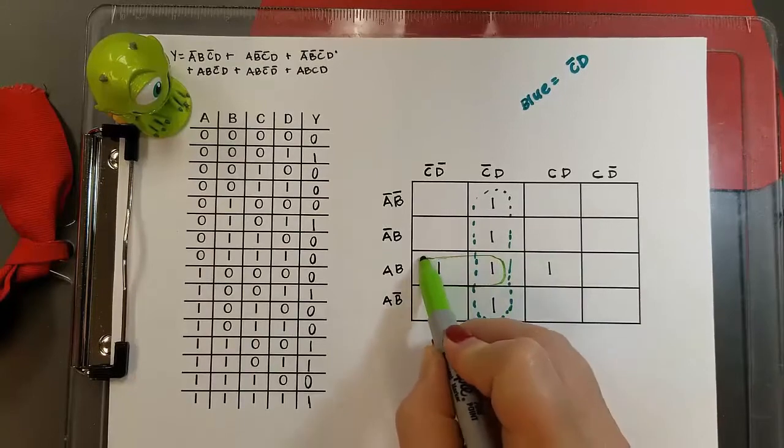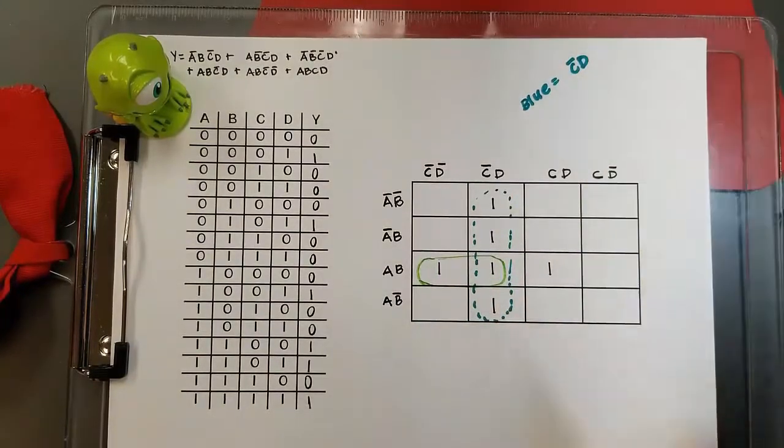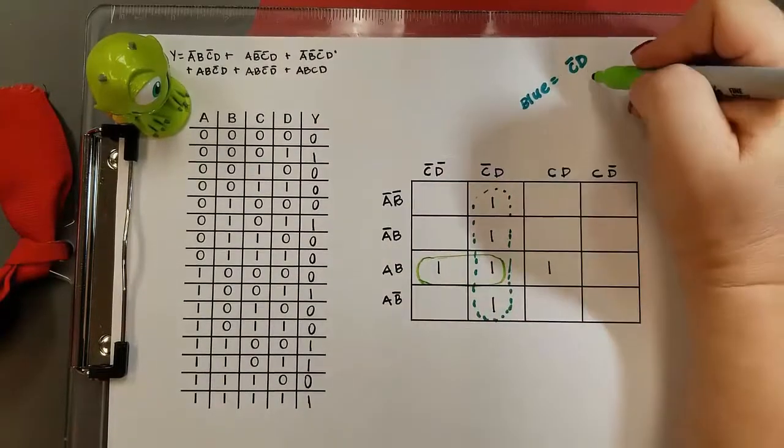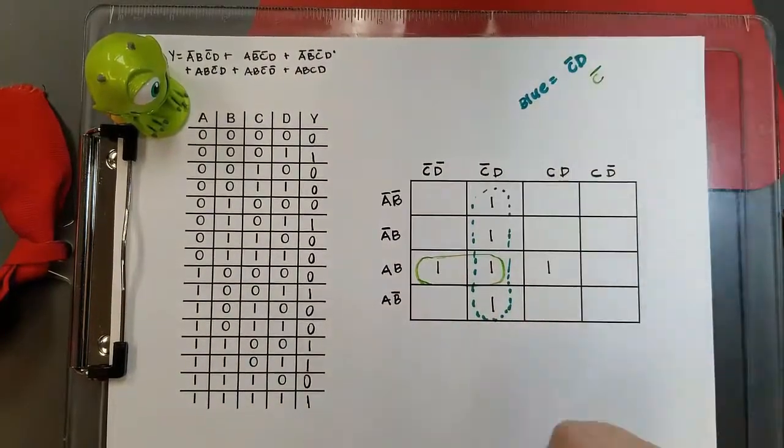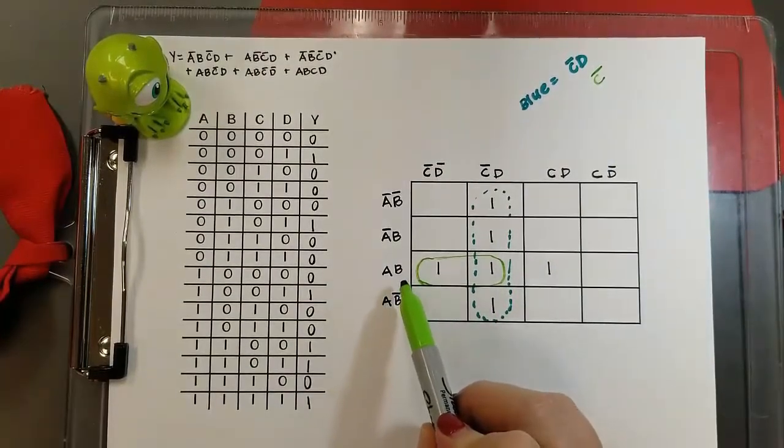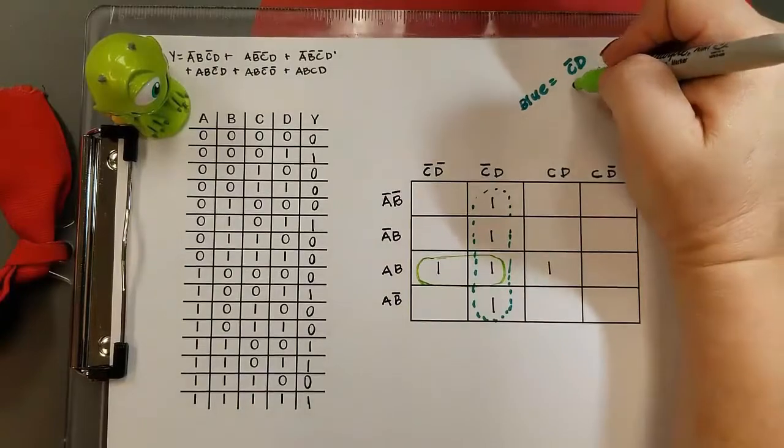So for that green pair, I have to look and see. As I move across there, not C stays the same but D changes. So I've got to keep not C and throw away D, and I'm also going to keep A B.